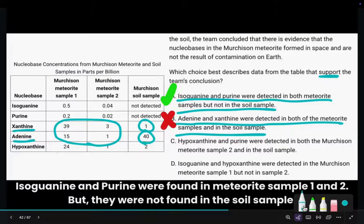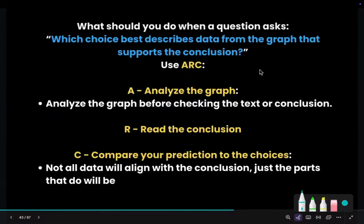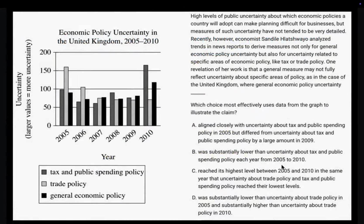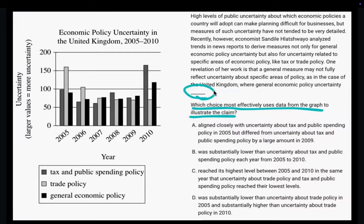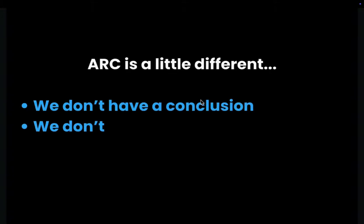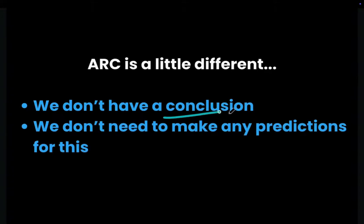Here are the main takeaways — take a screenshot if you want to remember these rules. To solve more questions like these, join our free classes. Now let's look at the second type of command of quantitative evidence question. This type asks: which choice most effectively uses data from the graph to illustrate the claim? You can identify this type from the blank at the end — an uncompleted text. We'll follow ARC again, though it's a little different since we don't have a conclusion and don't need to make predictions.